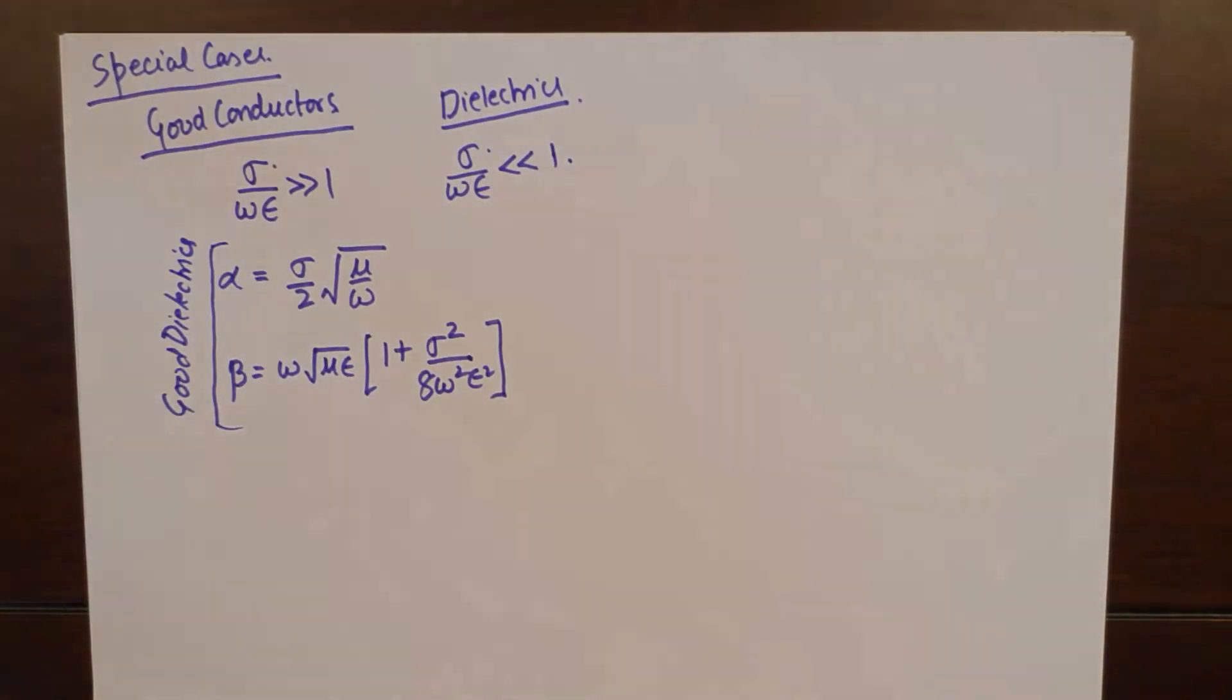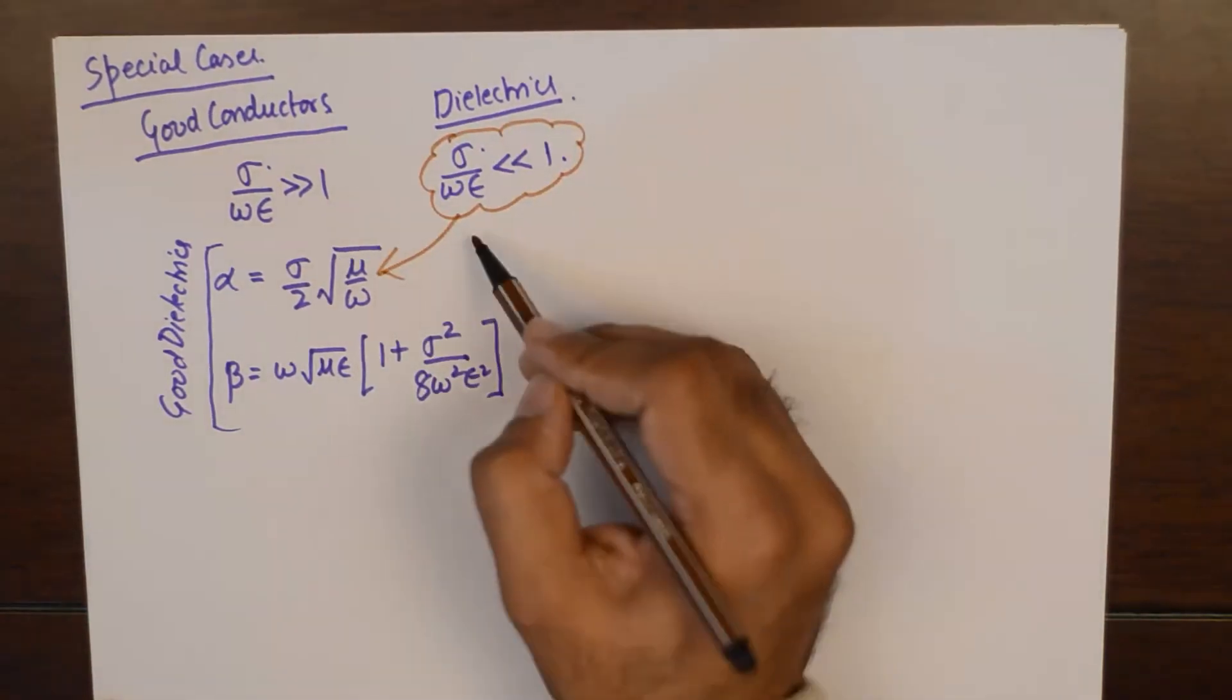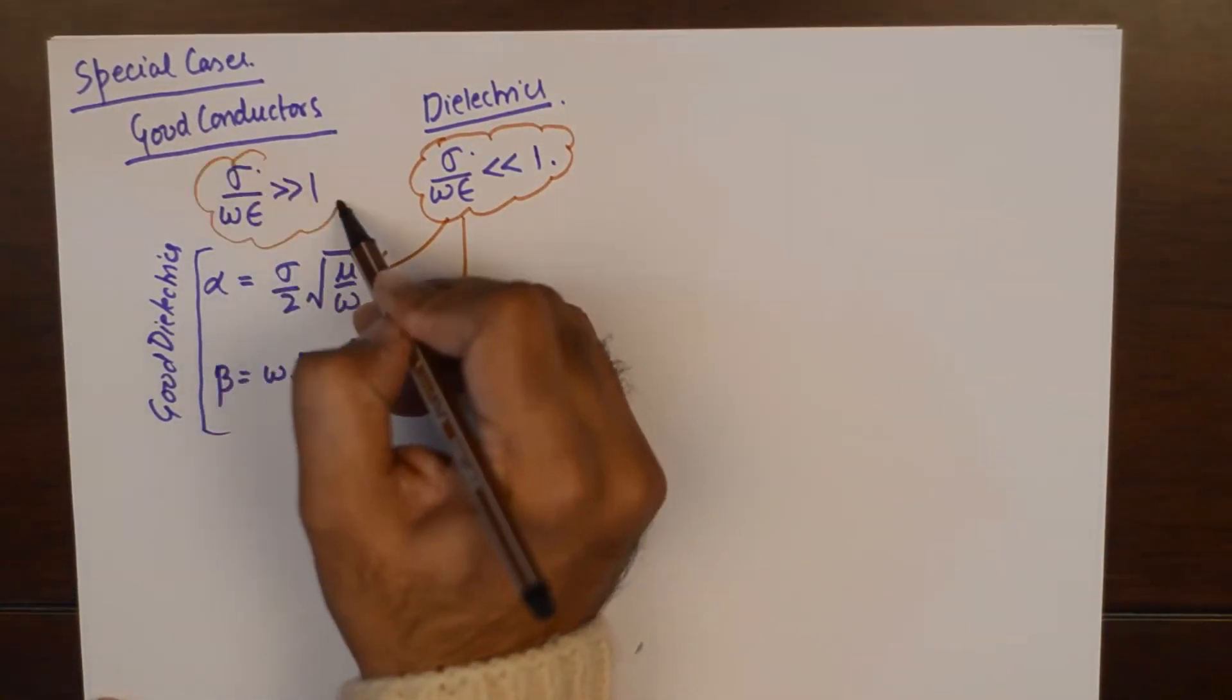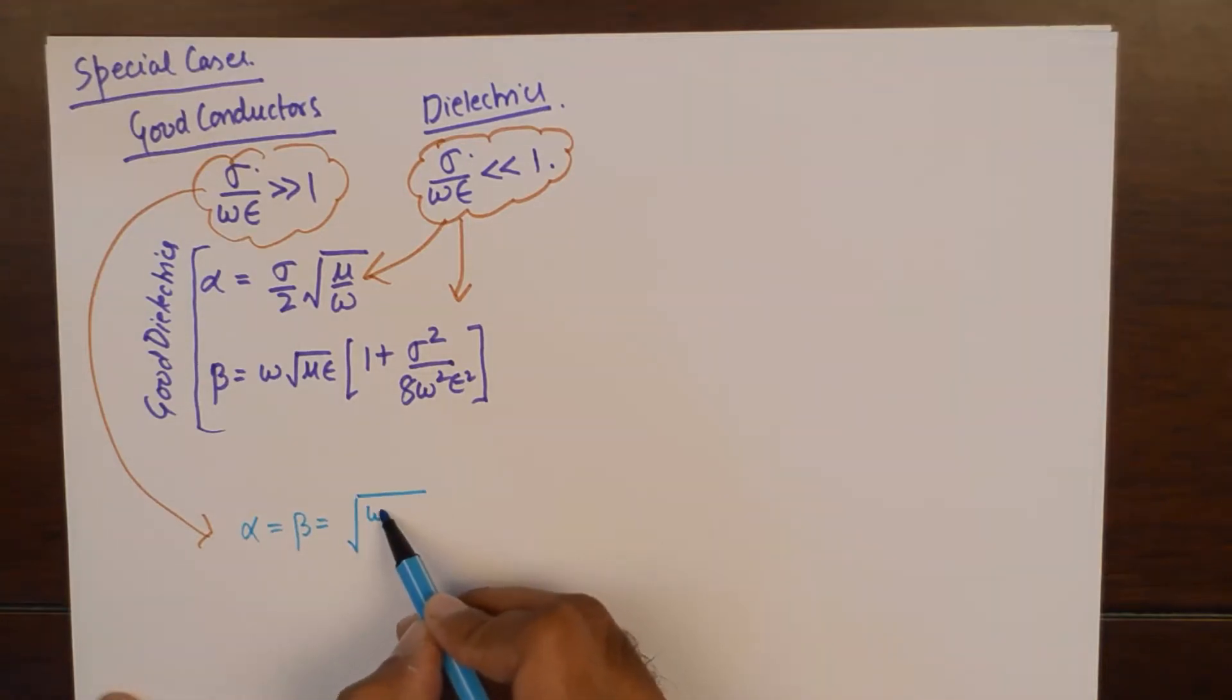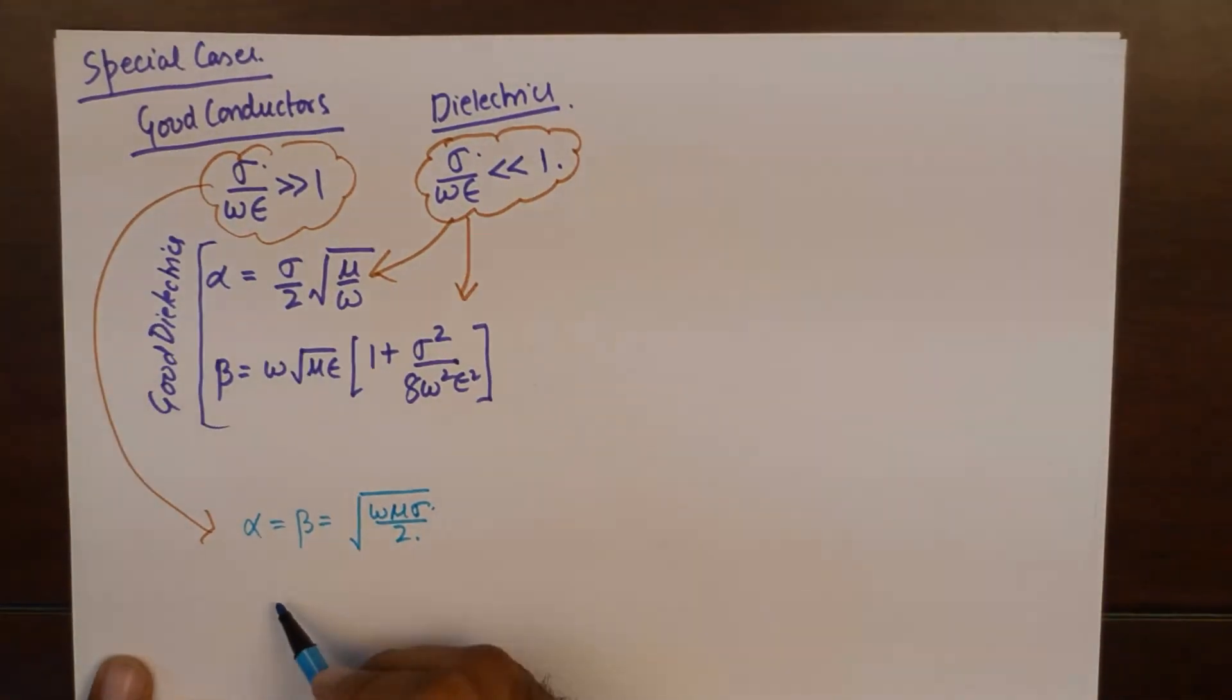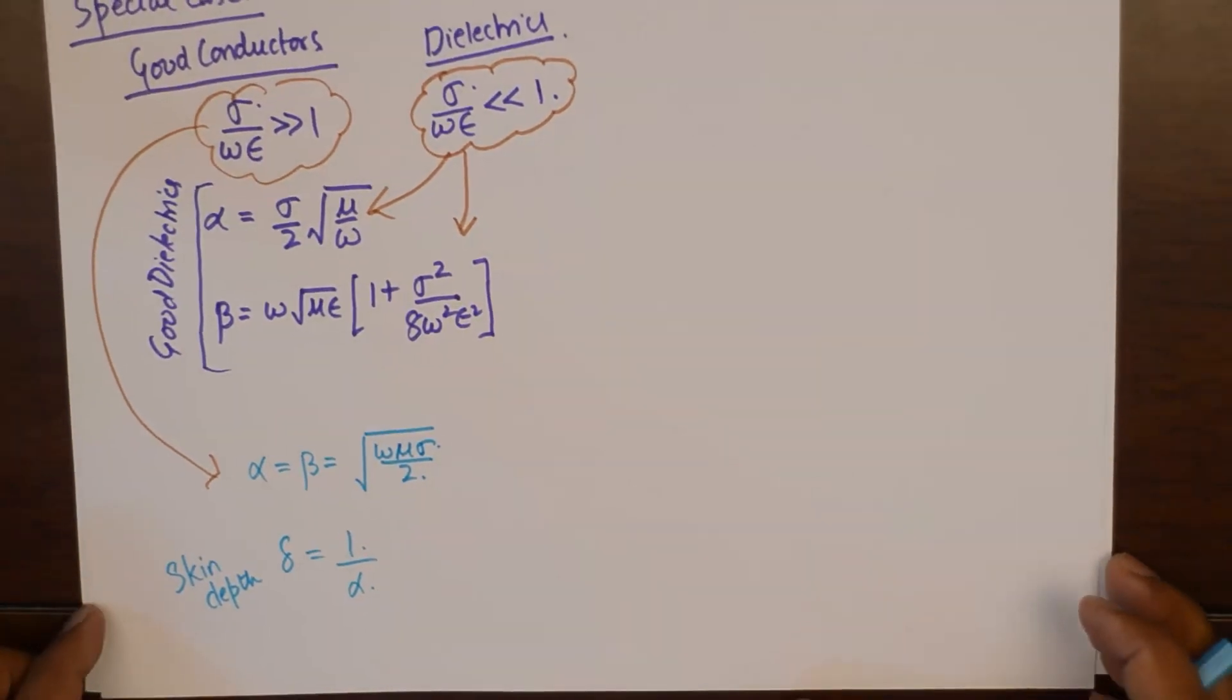These two values for alpha and beta are for good dielectrics. I'll mention the values for good conductors in a different colored pen. So this approximation results in this set of values, and this approximation is going to result in another set of values where alpha and beta are going to be very very simple. So you just have to remember one equation for alpha and beta. And for good conductors, there is going to be one more parameter, skin depth, which is going to be the reciprocal of alpha.